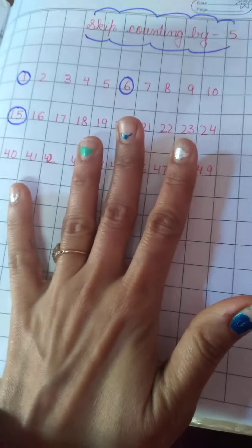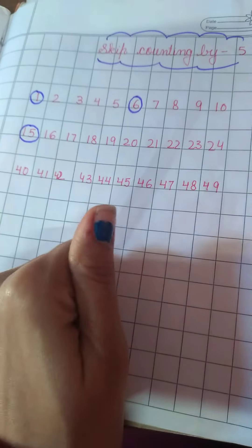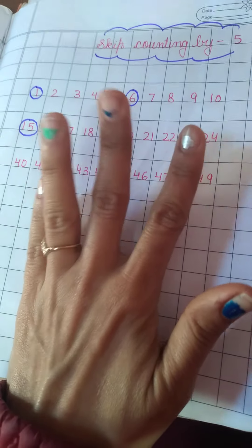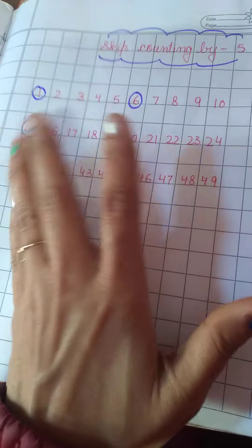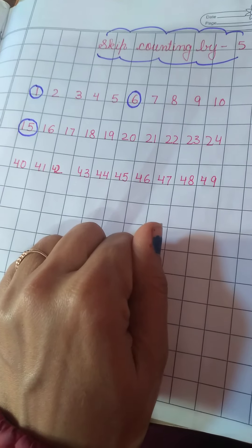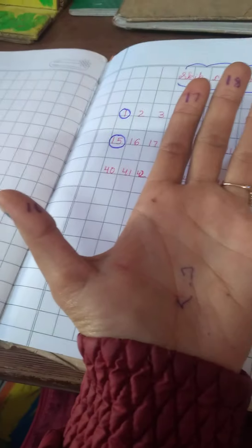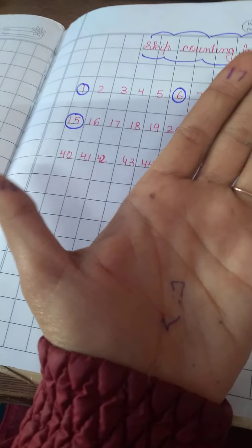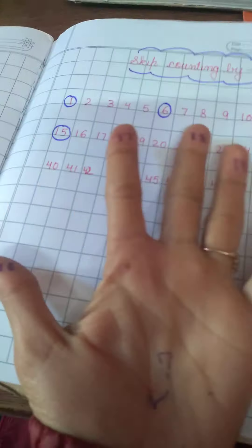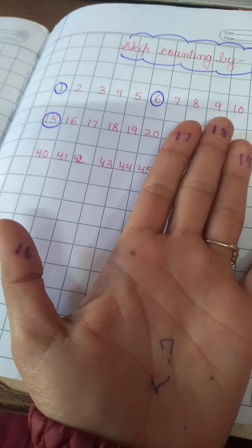On fingers. After 15 what will come? These are the five fingers. And this would be the fifth number where we have to jump. After 15. So after 15, these are the five fingers.